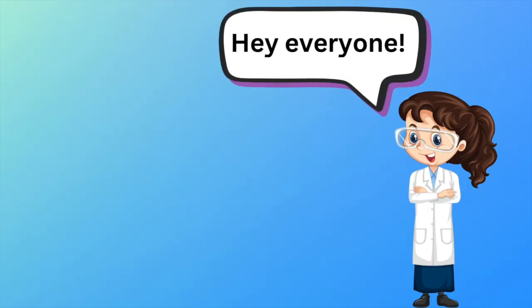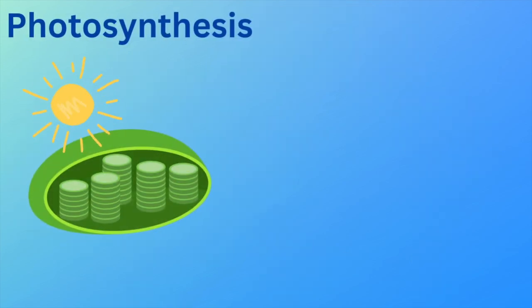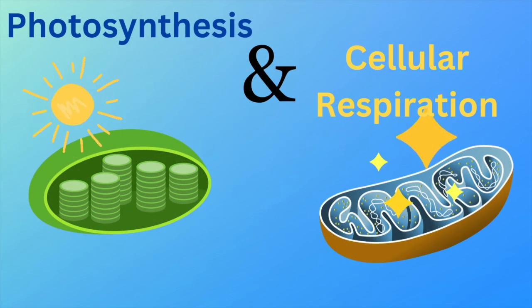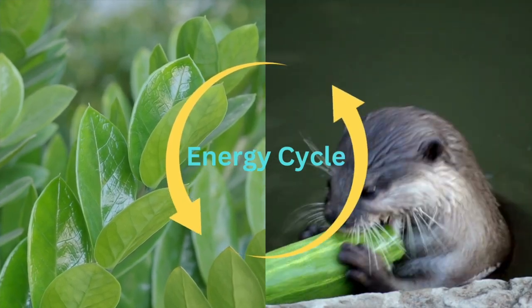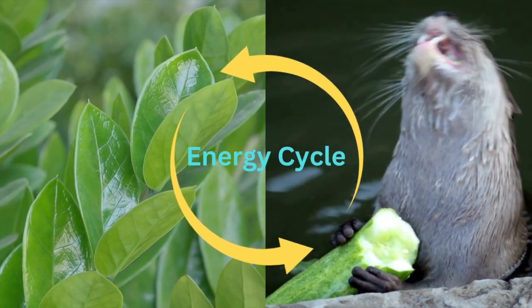Hey everyone! Today we're going to talk about two important processes that keep plants and animals alive: photosynthesis and cellular respiration. These two processes are like the ultimate energy cycle, helping plants make their own food and animals, including us, get energy from the food we eat.